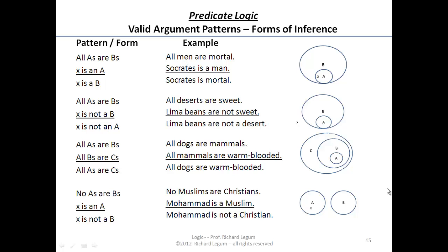We have the first pattern: all A's are B's, X is an A, therefore X is a B. For example: all men are mortal, Socrates is a man, therefore Socrates is mortal. We can visualize this with a Venn diagram — the circle of A is contained entirely within the circle of B's, and since X is inside A, X must also be inside B.